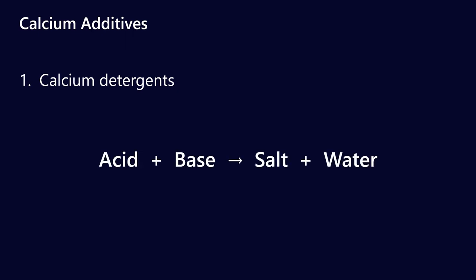Calcium additives come in two forms. The first is calcium detergents. We covered detergents in a previous video but effectively they're formed by this reaction. This is something you would have probably learned in high school chemistry. Acid plus base makes metal salt plus water. So in this case you'd probably be reacting a calcium hydroxide or something and you're getting a calcium salt. That's the calcium detergent.